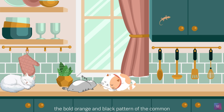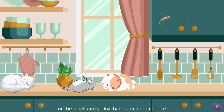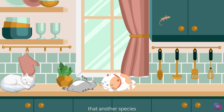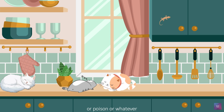The bold orange and black pattern of the common monarch butterfly, or the black and yellow bands on a bumblebee, are such warning colorations. And sometimes this warning coloration is so effective that another species — one that doesn't have any of the protective devices of sting or poison — will adopt the same warning colors and pattern.